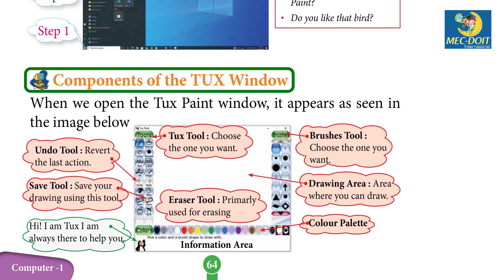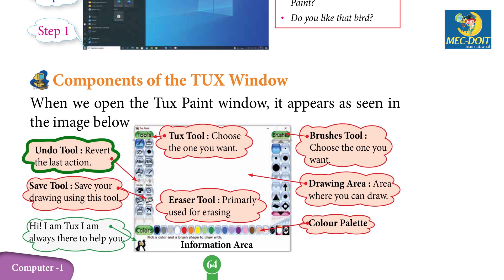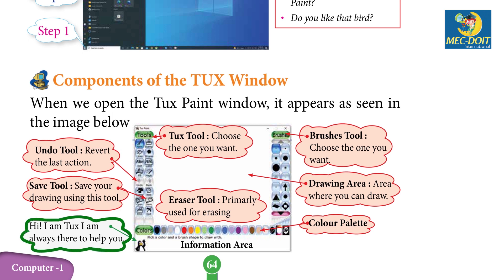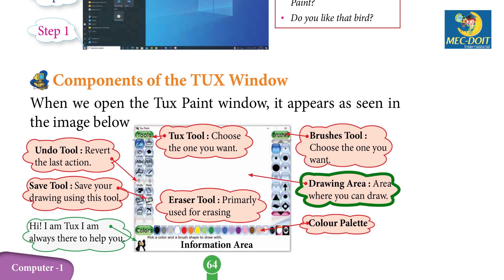Components of the Tux window. When we open the Tux Paint window, it appears as seen in the image below. Undo tool: reverts the last action. Save tool: saves your drawing. Hi, I am Tux — I am always there to help you. Tux tool: choose the one you want. Eraser tool: primarily used for erasing.